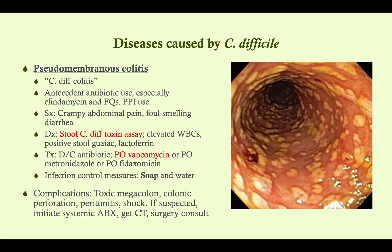The diagnosis for boards is the stool toxin assay — you look for the toxin in the stool. There are other ways to diagnose this, but for boards it's the toxin assay. If you've gotten a CBC, you would see elevated white count. Also, checking the stool you will see a positive stool Guaiac indicating blood cells, and a positive Lactoferrin, which is a surrogate marker for white blood cells in the stool.